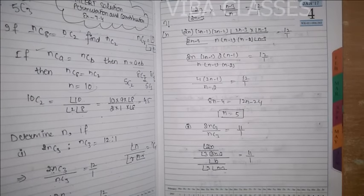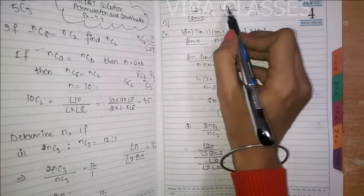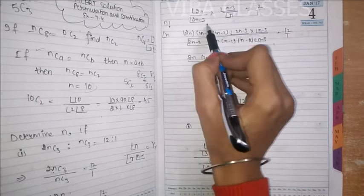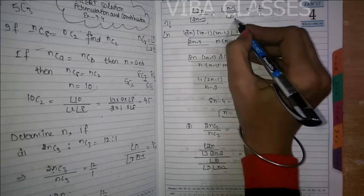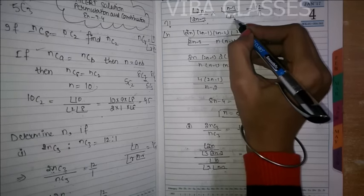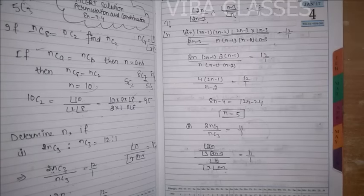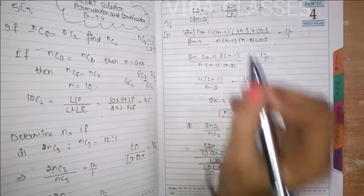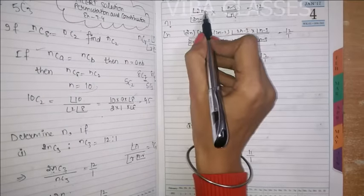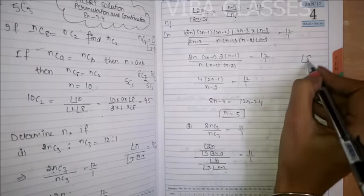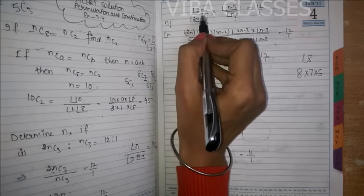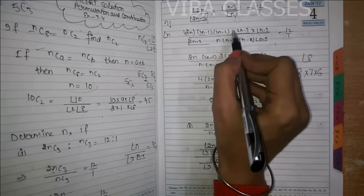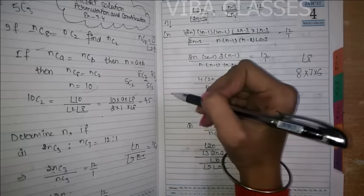Ab dekho, denominator wali cheez reciprocal ho jaayegi. Toh yeh ban gaya factorial 2n upon factorial (2n minus 3), aur jo factorial 3 tha woh factorial 3 se cancel out ho gaya. Aapke paas reh gaya factorial (n minus 3) upon factorial n. Ab dekho in dono ka link hai — agar aap 2n ki baat karein toh woh (2n minus 3) se bada hai kyunki usme already 3 subtract ho chuka hai. Toh jo bhi linked cheezein hoti hain, unme se jo badi information hai use open karna shuru karein.